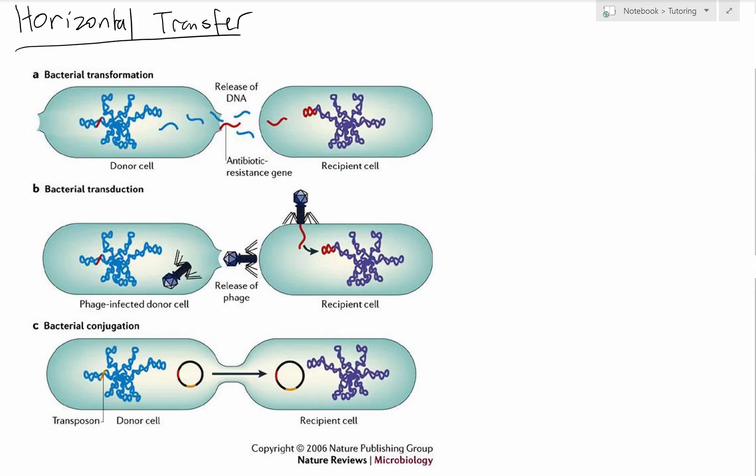This idea of horizontal transfer basically refers to things moving between cells. That's essentially what it means. As opposed to vertical transmission, which is like mother to daughter, or in the case of bacteria, the parent cell to the daughter cells, horizontal transfer is between two individuals that haven't arisen from the same cell line.